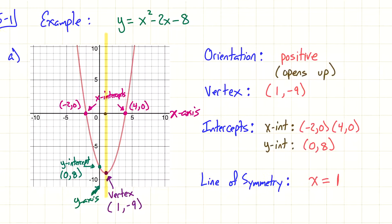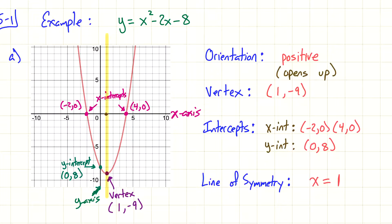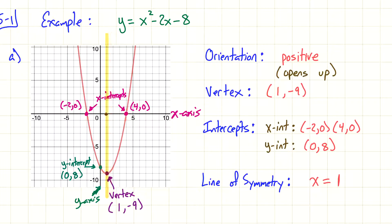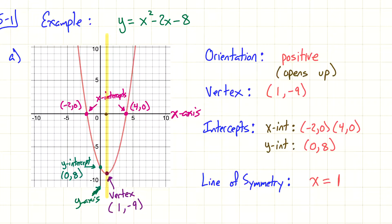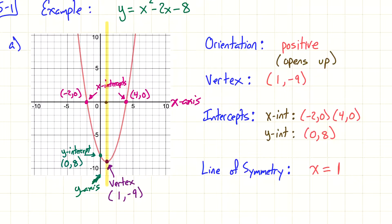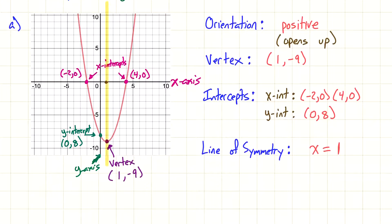So we know the orientation, we know the vertex, we know the intercepts. If someone was just graphing this, they could very easily plot three or four points, and with the line of symmetry they could figure out maybe five points total — which is enough to sketch a picture of the graph.